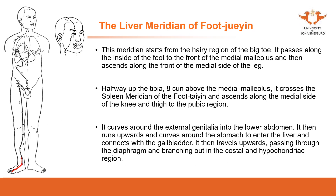The liver meridian is a Foot Jue Yin meridian, traveling from the foot to the abdomen and chest. It starts from the hairy region of the big toe — where the gallbladder meridian ends — passes along the inside of the foot and in front of the medial malleolus, then ascends along the front medial side of the leg up to the external genitalia region.